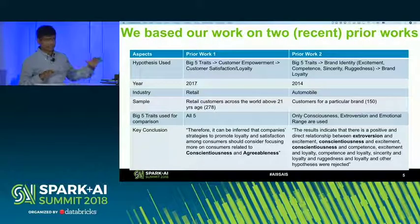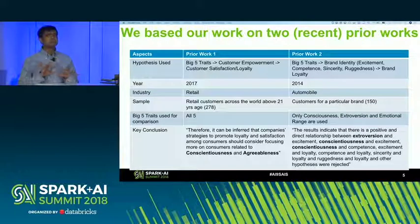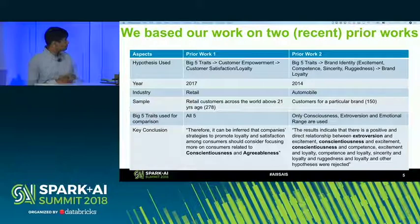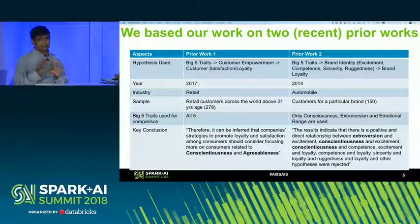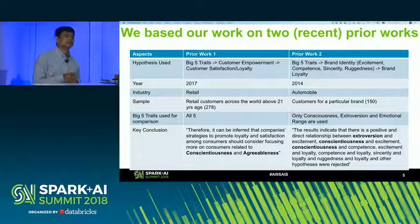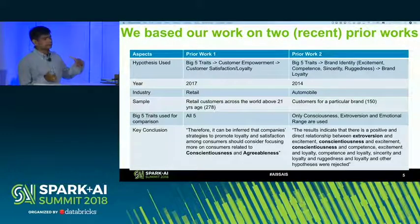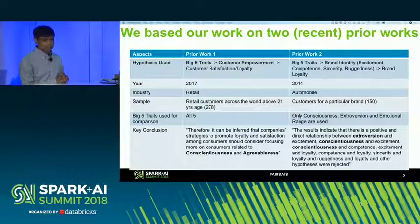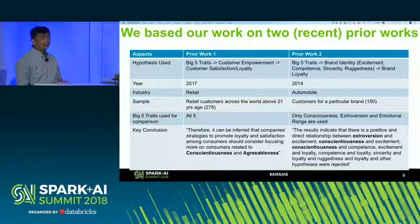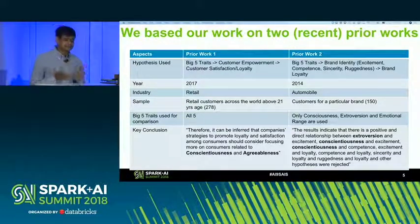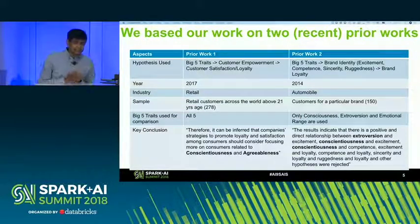There are actually plenty of works that have happened in this area. The two works we have based our research on are the most recent ones, since they already cover previous work and draw further corollaries from them. The first one is from the retail industry, trying to correlate the Big Five personality traits to customer satisfaction and loyalty through a meta-layer of customer empowerment. They used a sample of retail customers across the world, and their results say that loyalty is actually guided by the factors of agreeableness and conscientiousness.